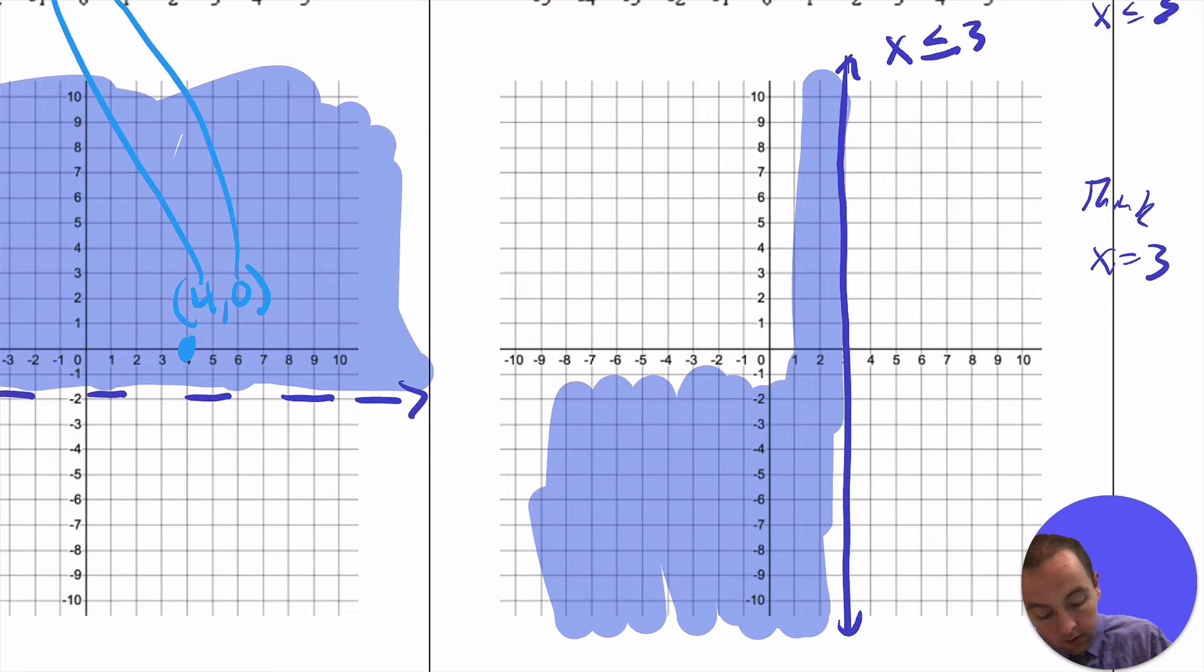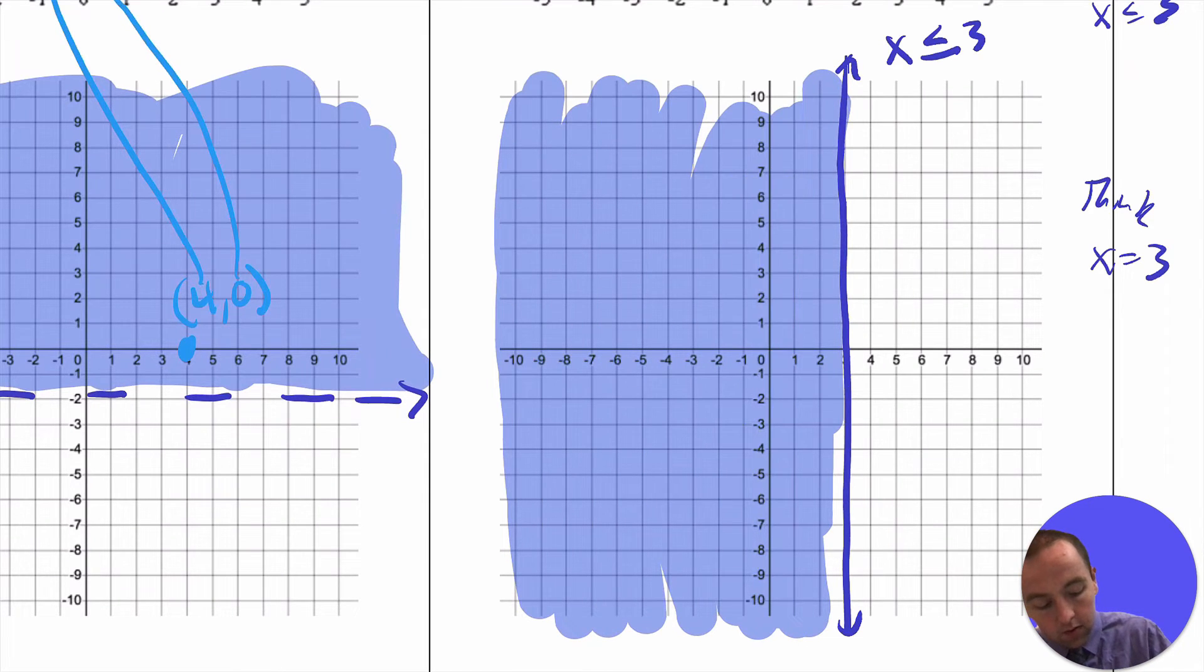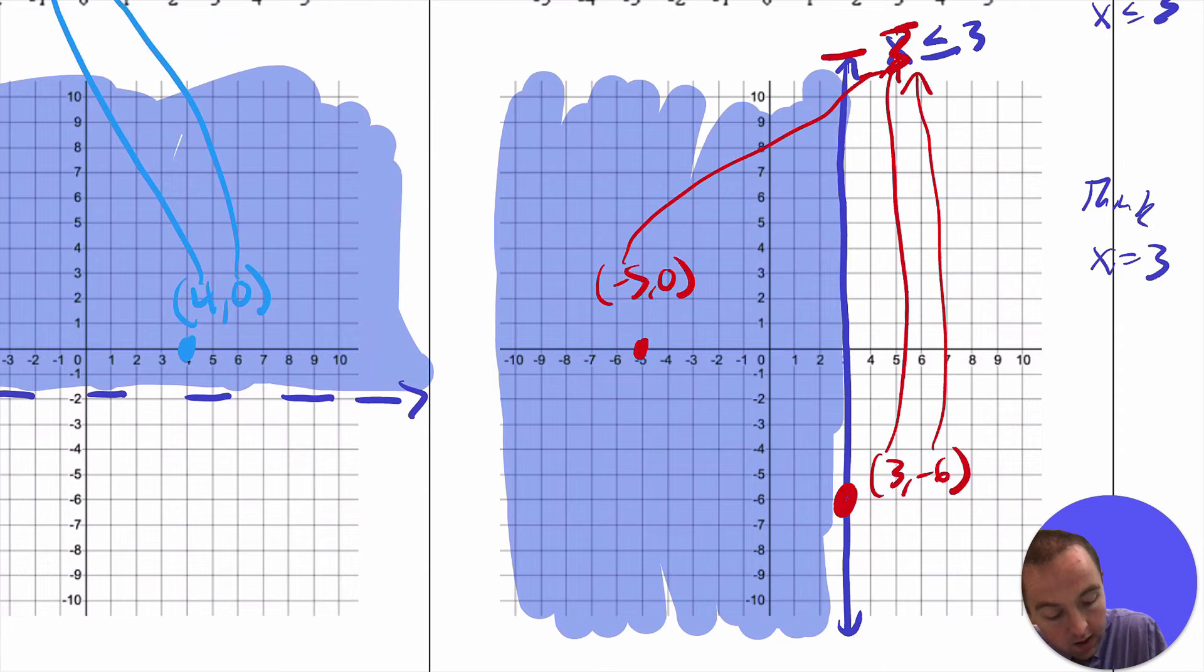So all of these ordered pairs right here should satisfy the relationship, and we can check that just by picking out some random pairs. So like right here, this point is in the graph of the region we just colored in. That point is 3, negative 6, and when you plug in 3 for x and negative 6 for y, the negative 6 doesn't go anywhere because there is no y, but at least when you plug in the 3, then you get 3 is less than or equal to 3, which is a true number statement. And you can pick that for other things, like negative 5, 0 is in the shaded region. When you plugged in negative 5 there, negative 5 is indeed less. So we know we've properly shaded that.